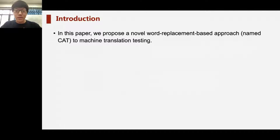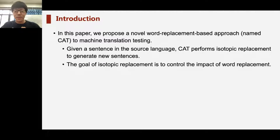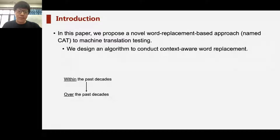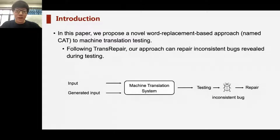To tackle this difficulty, we propose a novel word replacement-based approach called CAT for machine translation testing. Given a sentence in the source language, CAT performs isotopic replacement to generate new sentences, with the goal of controlling the impact of word replacement. To realize isotopic replacement, we first conduct context-aware word replacement, replacing a word within a sentence with another word that is also suitable for the context. We then calculate the context-aware semantic similarity between the original and replacement word, using this similarity to discard replacements that influence the semantics. Following the testing and repair approach TransRepair, CAT can also test and further repair inconsistency bugs.